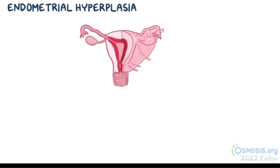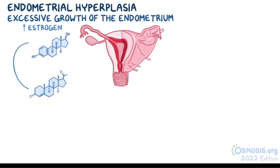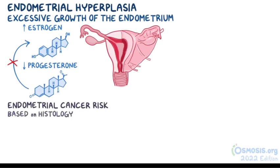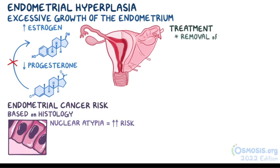As a quick recap: endometrial hyperplasia is the excessive growth of the endometrium, most often caused by long-standing increased exposure to estrogen without the counteracting effect of progesterone. It carries a risk of progression to endometrial cancer depending on histological findings, where complex hyperplasia with nuclear atypia has the highest risk. Treatment involves removing the underlying cause of excess estrogen, progesterone-containing medications, and in some cases hysterectomy.